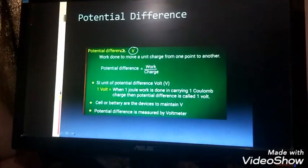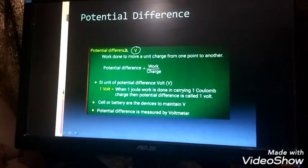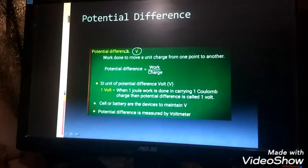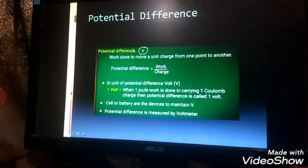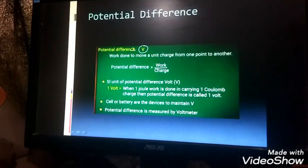Now how are we going to define one volt? When one joule of work is done in carrying one coulomb charge, the potential difference is called one volt.